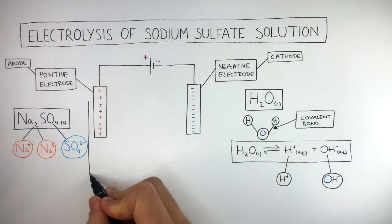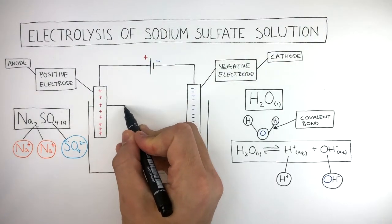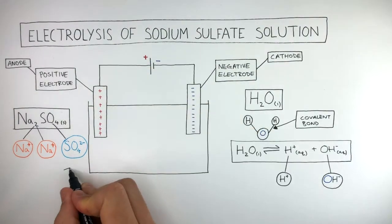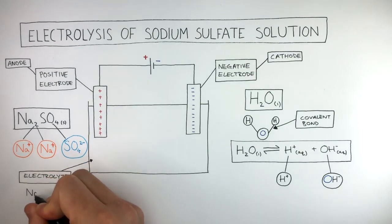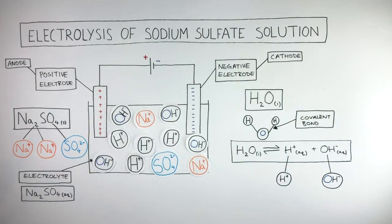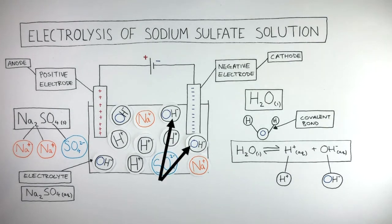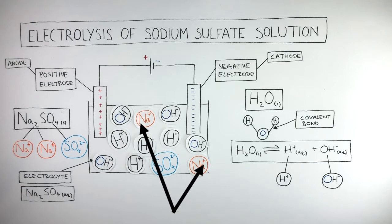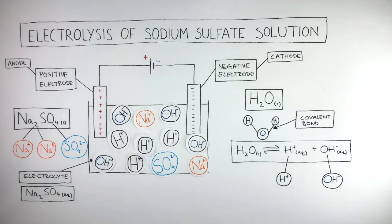The container contains the electrolyte which the electrodes are dipped into, so the electrolyte is aqueous sodium sulfate. The cations and anions in this electrolyte are H+ cations and hydroxide anions, both coming from the ionized water, and then sodium cations and sulfate anions, both coming from the sodium sulfate.